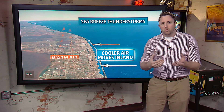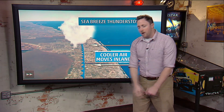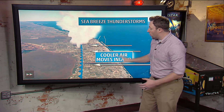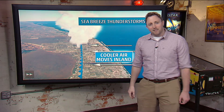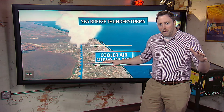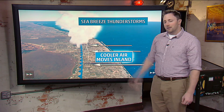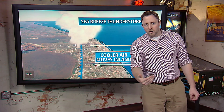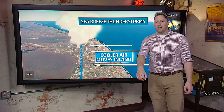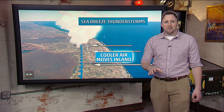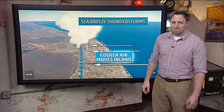What happens then is we have this cooler air from the ocean and a little frontal boundary will develop. Along that frontal boundary it will move inland, and as it does, it will get all that warm air that is over the land and force it up, developing thunderstorms. That's why along coastlines you'll tend to see thunderstorms very accurately right after the midday hours in the summertime.